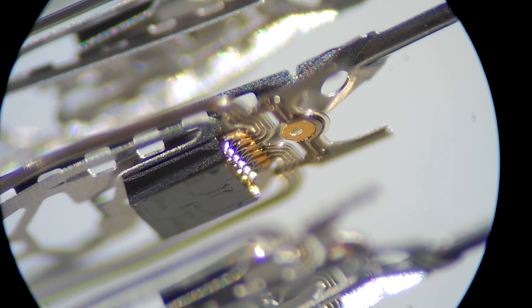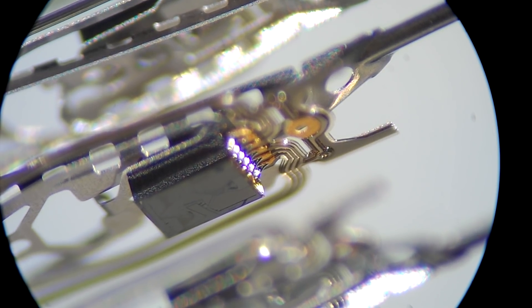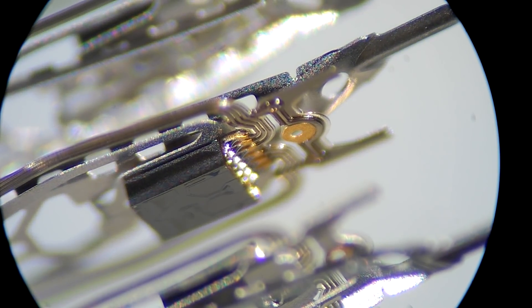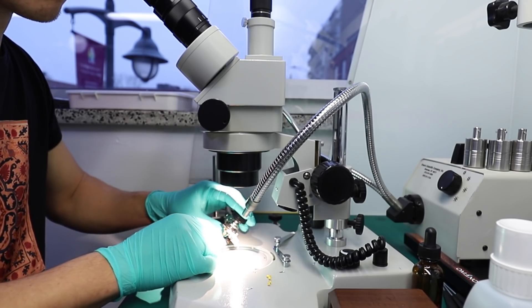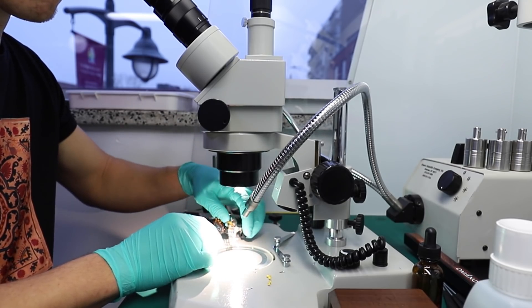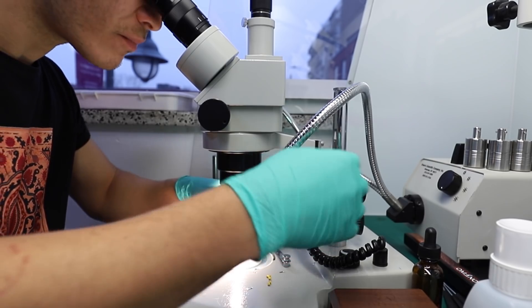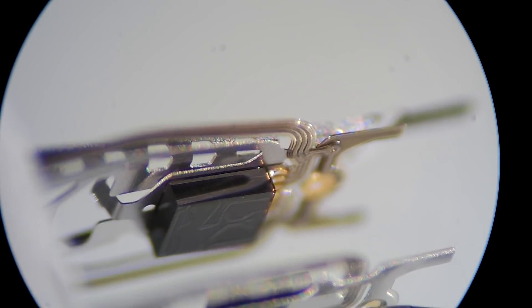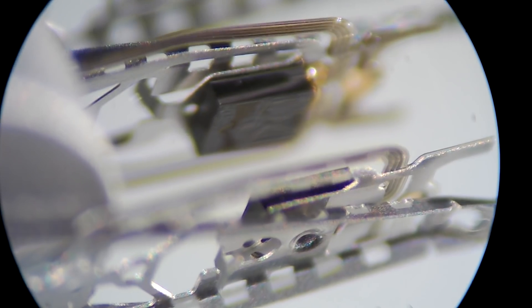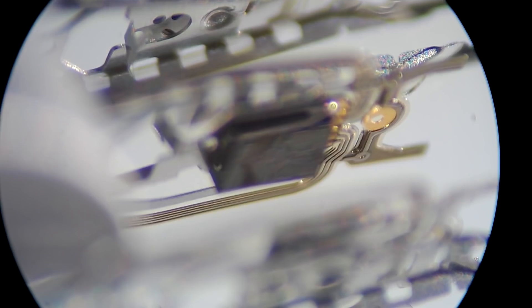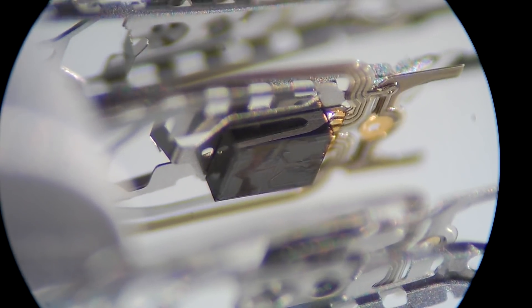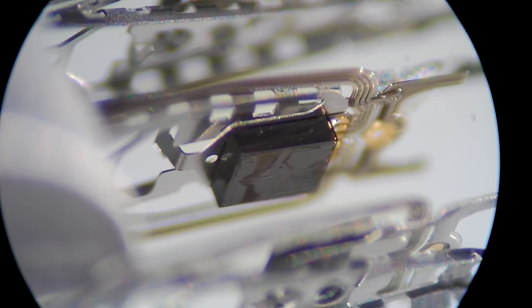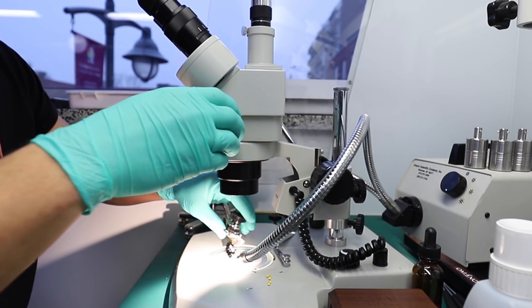Looking at this head assembly right now, we see that head zero is contaminated badly, but head number two wasn't as badly contaminated. In the head assembly, the sequence begins with zero, then one, then two, then three. The bottom disc carries head zero and one, the top disc carries head two and three. Right now you're looking at head one, and the lowest one that's turned away from us is head zero.